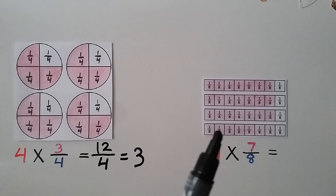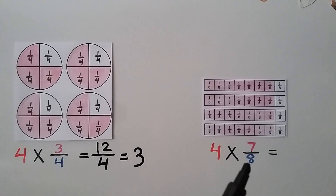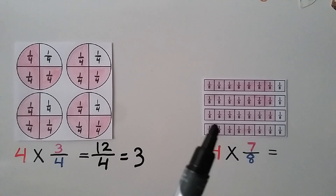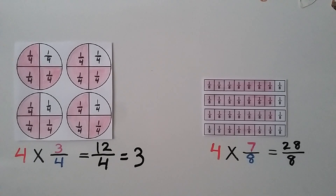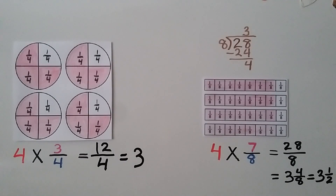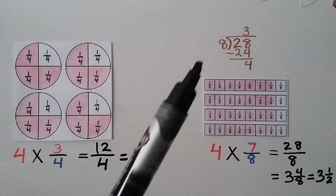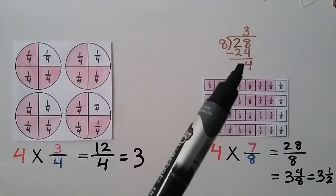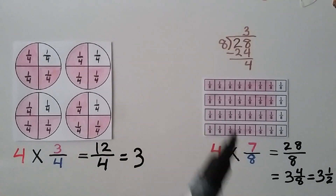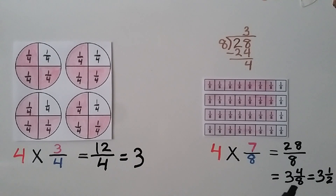Here we have 4 fraction strips that are split into eighths — denominator 8. 7 of each strip are filled in, so that's 7 eighths, and there are 4 of them, so we have 4 times 7 eighths. We multiply the whole number by the numerator and write it over the denominator of the factor. We have 28 eighths. Using division: 28 divided by 8 — 8 times 3 is 24 with 4 left over — gives us 3 whole and 4 eighths. We can simplify 4 eighths as one half, so it's equal to 3 and a half.